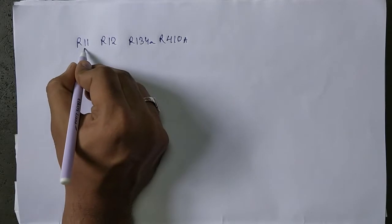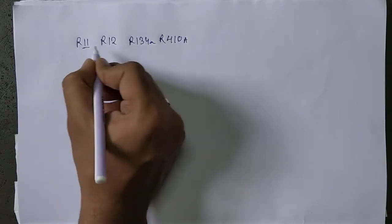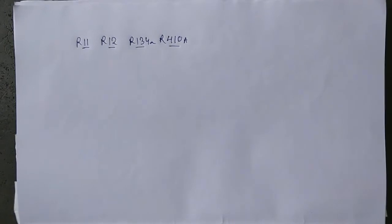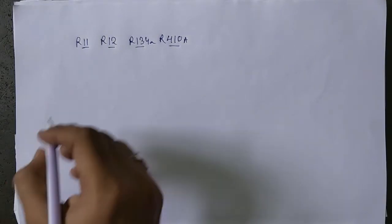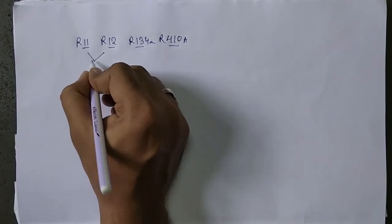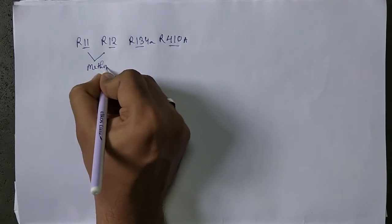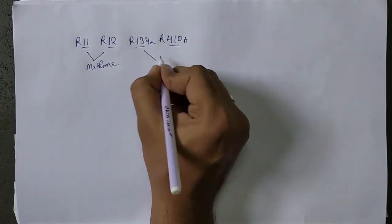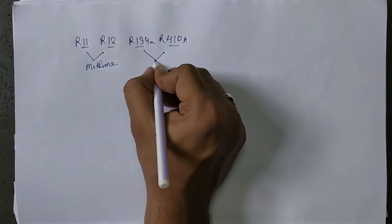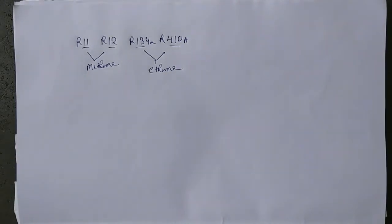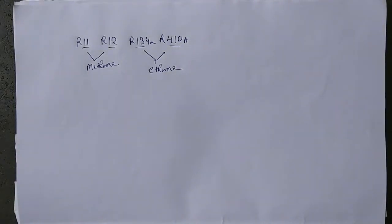Look, there are two numbers and there are three numbers. What does this mean? Two numbers means that it is methane based. Which has three numbers is ethane based, and which has two numbers is methane based.